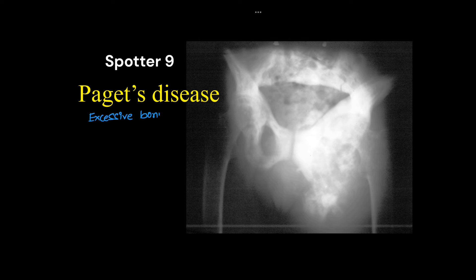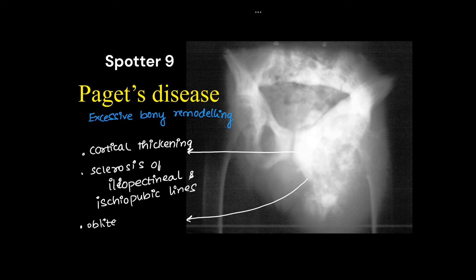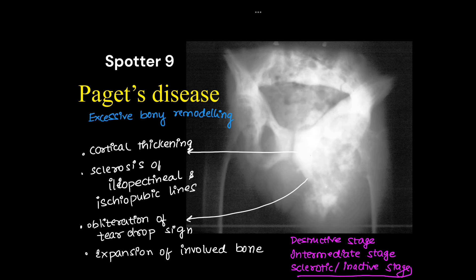This was a case of Paget's disease, in which there is excessive bony remodeling. In this case we can see cortical thickening and sclerosis of the bone obliterating the iliopectineal and ischiopubic lines, with obliteration of the teardrop sign — a normal landmark on pelvic X-ray. There is expansion of the involved bone. There are three stages of Paget's disease: destructive, intermediate, and sclerotic or inactive — this case shows the sclerotic stage.